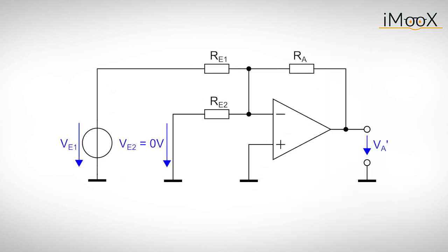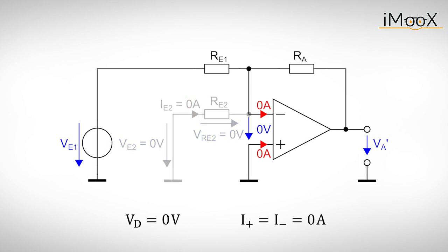But now back to our summing amplifier. We arbitrarily start with Ve1 and get this circuit. Again we apply the rules for negative feedback amplifiers. This means the voltage at the inverting input and hence the voltage over Re2 is zero volts. Consequently no current flows through Re2 and we can remove Re2 from the circuit.